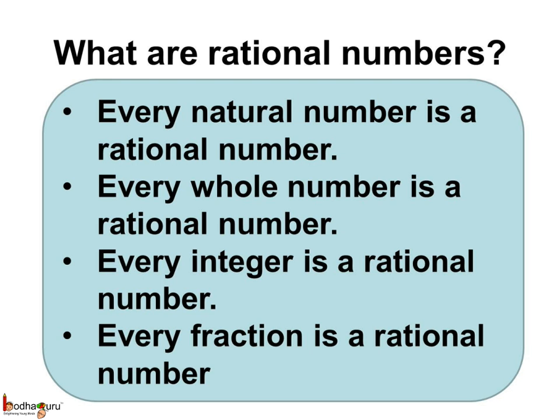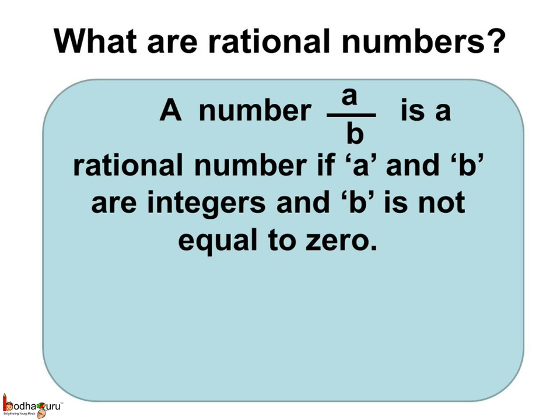To sum up what we learned today, what are rational numbers? Every natural number is a rational number. Every whole number is a rational number. Every integer is a rational number. And every fraction is a rational number.